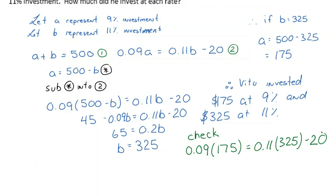So 0.09 times 175 is equal to 0.11 times 325 minus 20. All right, so here's our setup. And if we work this through, we should see that the left side is equal to the right side. So let's check that. And if you take this and plug in your calculator, you get 15.75 is equal to 15.75. So I feel good about this, and I can give myself a little check.